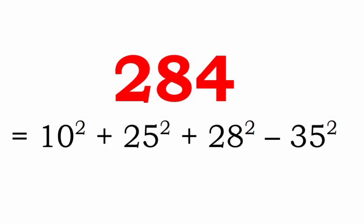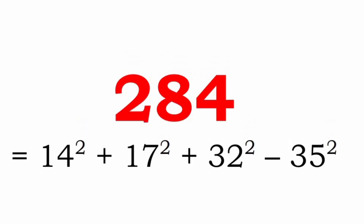This is 10² plus 25² plus 28² minus 35², where 0, 1, 2, 5, and 8 are the only digits used. Another way to write 284 is 14² plus 17² plus 32² minus 35², where the digits used are 1, 2, 3, 5, and 7 only.